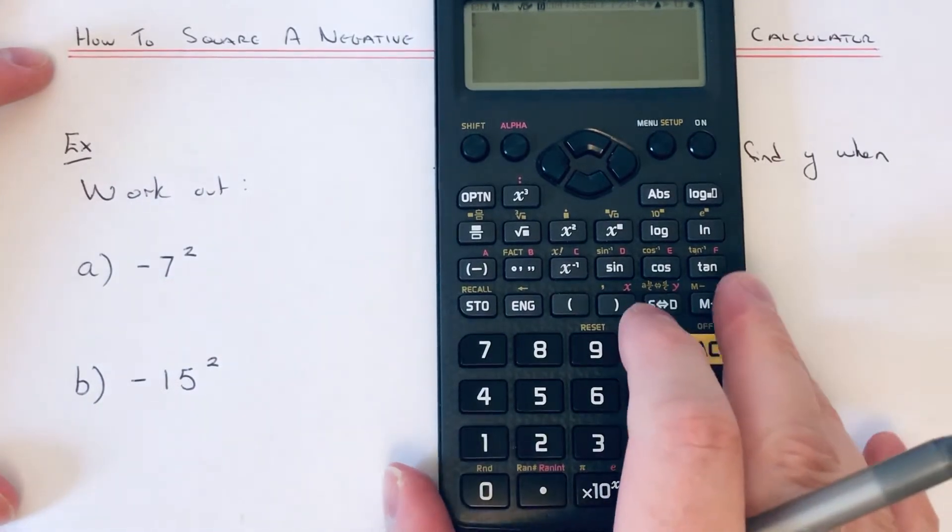Because minus 7 squared is minus 7 times minus 7, and two negatives multiplied together gives you a positive answer. So the calculator has given us the wrong answer here.